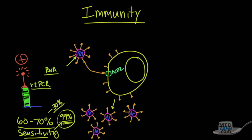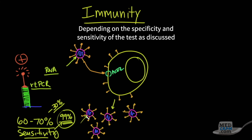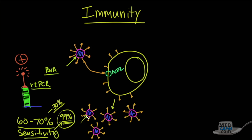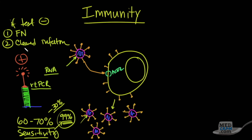This is the kind of testing you want to do in the acute situation. If someone is infected and has a lot of viral particles, it'll be easy to detect a positive result. If the person has recovered and there is no more RNA, their test will be negative. But here's the key point — if the test is negative, there are two possibilities: it could be a false negative, or they could have cleared the infection. That's the real issue with regard to reinfection.